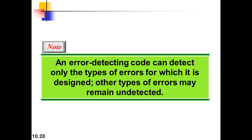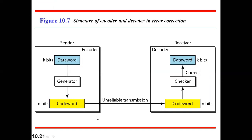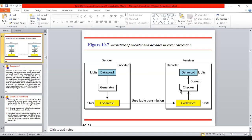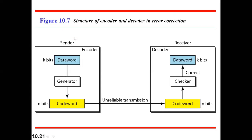An error detecting code can detect only the types of errors for which it is designed. Sometimes we design for single bit errors only, and sometimes we design to handle burst errors as well — checking for more than one bit error. Depending upon the implementation and the application, other types of errors may remain undetected.